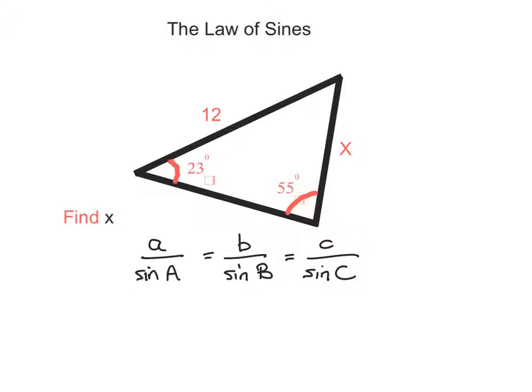But we only need two of those. Here we know that x and 23 are opposite each other, and 55 and 12, so we can say that 12 over sine 55 will equal x over sine 23. It's got to be the angle and the side opposite, so it's the sine of the angle and then the side. Here we're going to cross multiply.